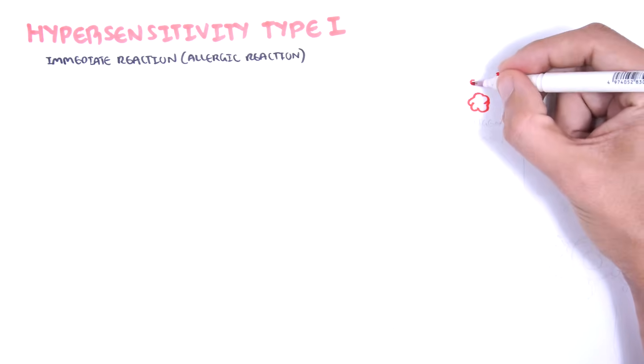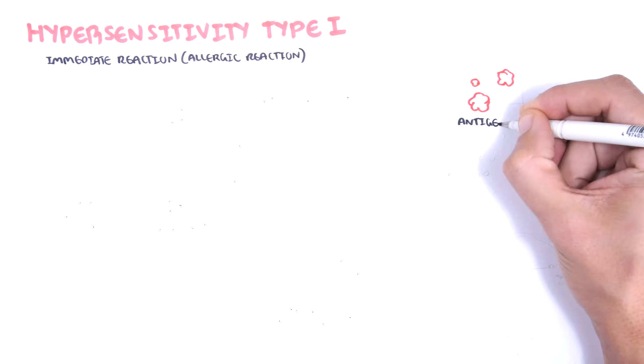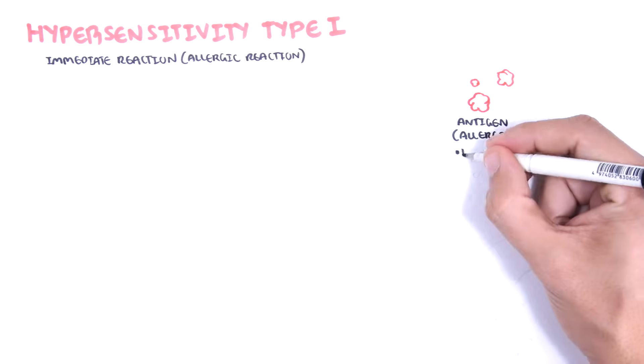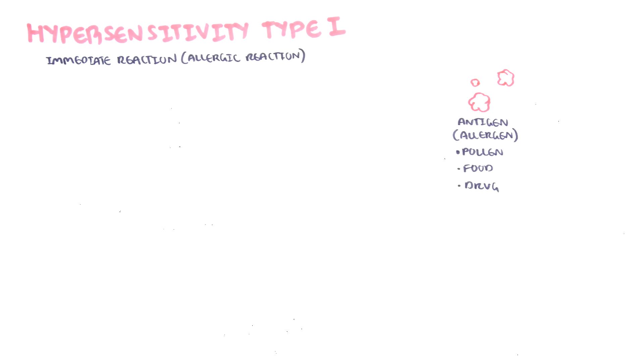A scenario of an allergic reaction, which is a type 1 hypersensitivity reaction, involves a first contact or first exposure to a particular benign antigen, such as a pollen, a particular food, or a particular drug.